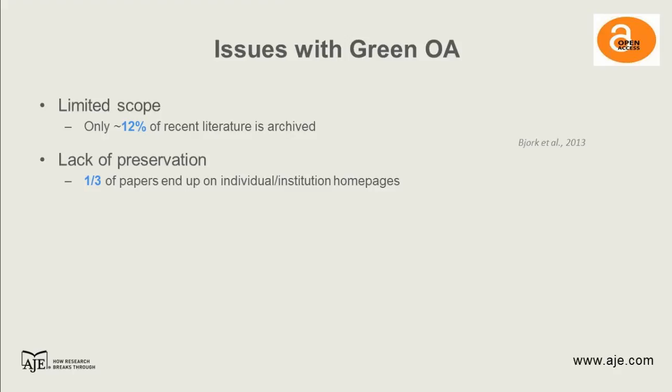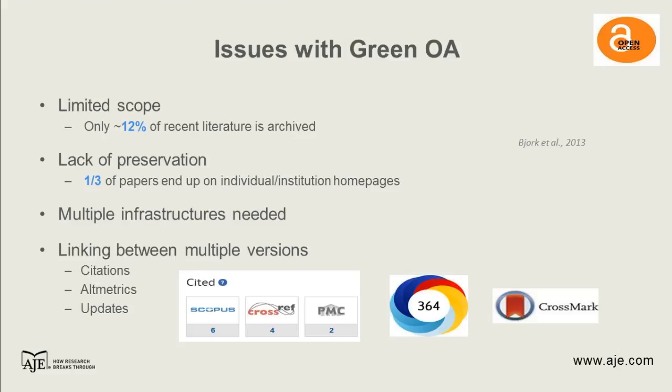If people are citing green OA copies and those copies go away, that creates at least a headache for anyone trying to track things down. There's also a lot of duplicated infrastructure — essentially the same database built over and over in different places. If you're trying to measure citations to your paper, Scopus and Crossref likely aren't picking up citations to a green open access version of your article if it doesn't use the same DOI.